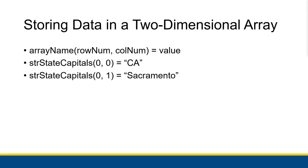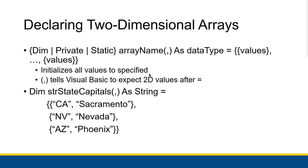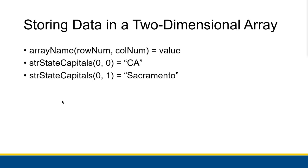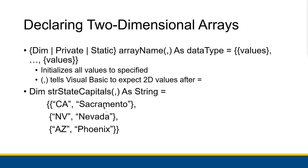If you want to store data inside a two-dimensional array, you index into it like you would a string or a one-dimensional array, but you specify the row number, a comma, and then the column number. So string state capitals at 0, 0 is California. Row 0, column 1 you might set to Sacramento. Then row 1 column 0, row 1 column 1, row 2 column 0, row 2 column 1, and so on.